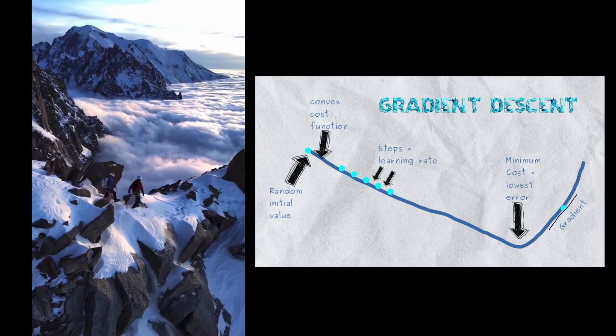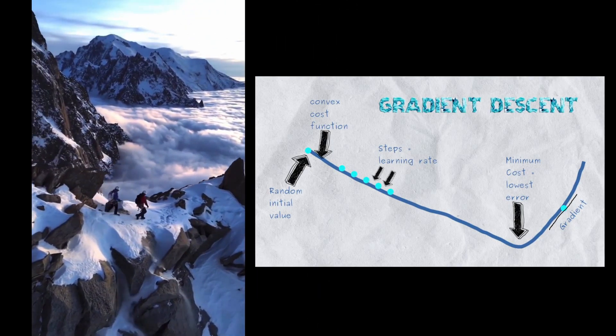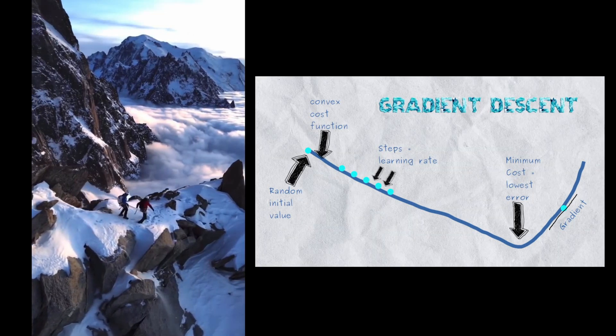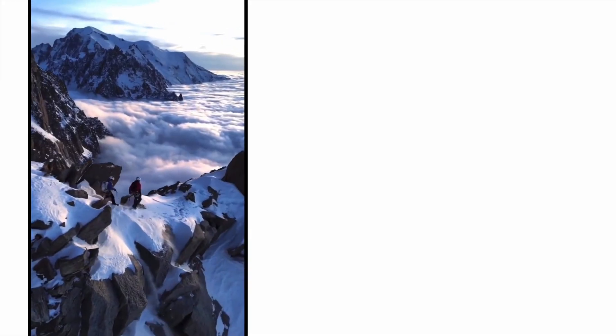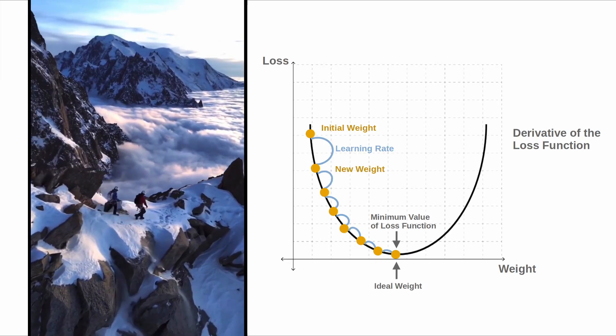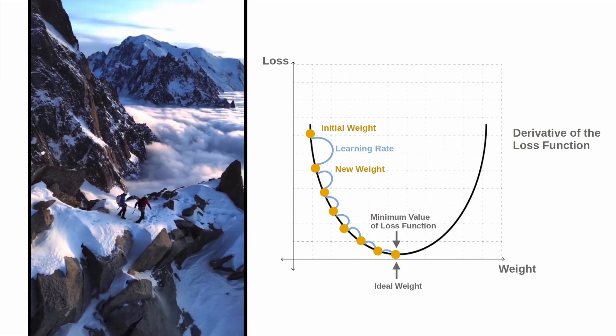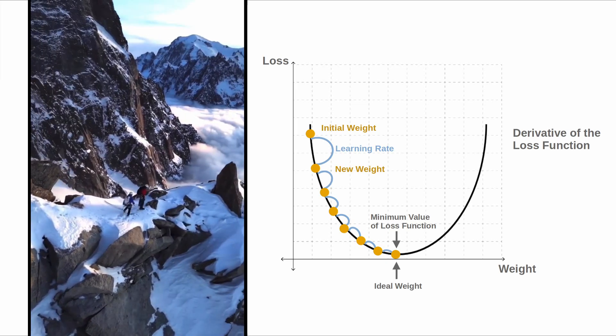Gradient descent is an algorithm that helps you navigate the complexities of neural networks by finding the optimal direction to take with each step. It's like having a map that constantly updates its view of the terrain showing you which direction to take to minimize the error.